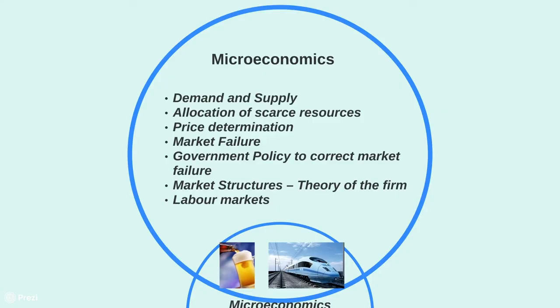Economics is divided into two separate syllabus sections — two separate disciplines. The first area is what we describe as microeconomics. Microeconomics looks at small-scale individual issues: the concept of demand and supply and price determination, market failure, and what we call government intervention — how the government intervenes in markets to correct problems that might appear.